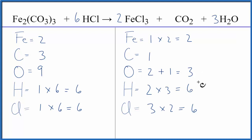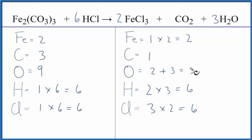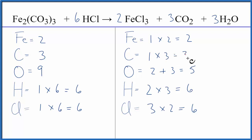Then we need to update the oxygen atoms. We have the two here in the carbon dioxide, plus we have one times three — three of those — so that gives us five oxygens. At this point, let's fix the carbons and see if that fixes the oxygens. We have three here and one here, so we put a coefficient of three. One times three gives us three carbons, and let's update the oxygens.